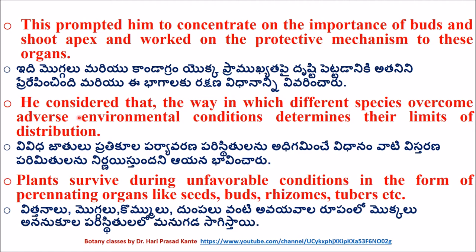Different species overcome adverse environmental conditions, which determines their limits of distribution. A best example is that in cold climate regions there are conifers, and temperate zones have mesophytes. Plants survive during unfavorable conditions in the form of perennating organs like seeds, buds, rhizomes, and tubers.